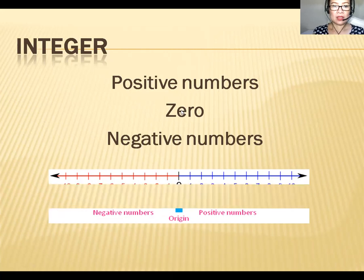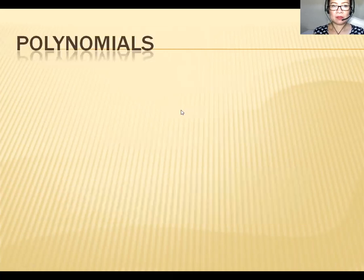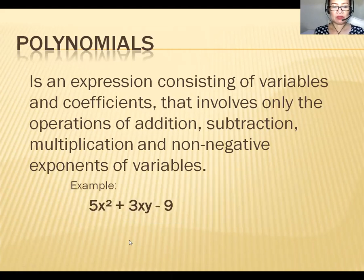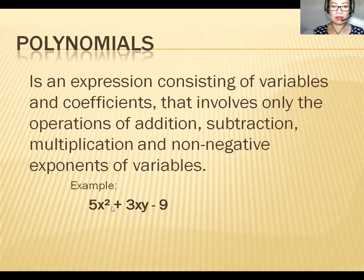Next is a polynomial. A polynomial is an expression consisting of variables and coefficients that involves only the operations of addition, subtraction, multiplication, and non-negative exponents of variables. For example, the expression 5x² + 3xy − 7: here 5 and 3 are the coefficients, x and xy are the variables, and 2 is the exponent, which is non-negative. If the exponent becomes negative, it is not a polynomial.